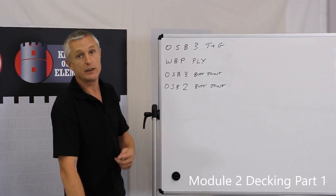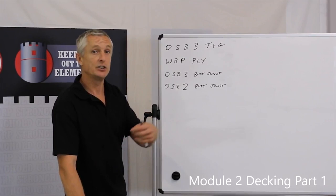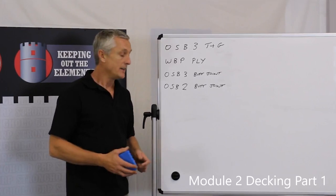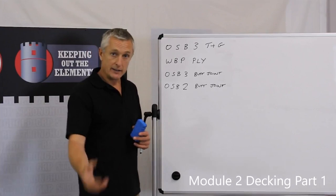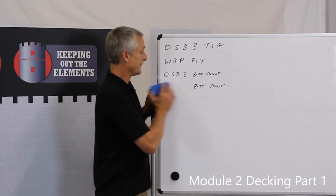When boards are manufactured they have a very low moisture content so that the glues will bond properly and then they basically store them for a while, they absorb moisture and expand to their in-situ size. So an OSB2 product is not pre-expanded so it'll expand on the roof and stress the joints. Avoid using OSB2.